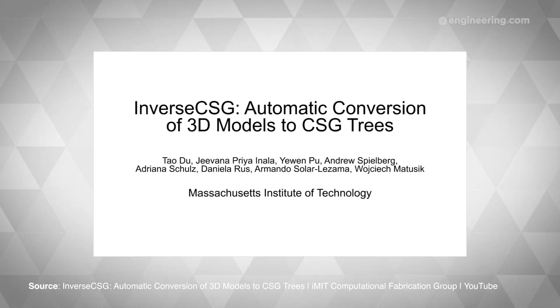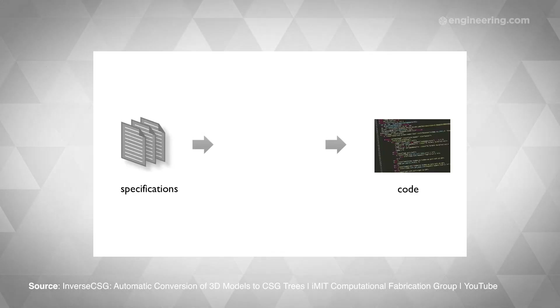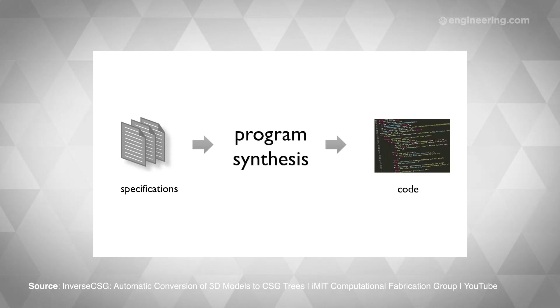Customizing that mesh can be difficult, and this is where the problem comes in. Converting a 3D mesh back into a 3D model doesn't scale well with complexity, and accuracy can be compromised when working with noisy, low-resolution files. Fortunately, a team of researchers from MIT have found a way to apply a technique known as program synthesis to break CAD models into their primitive shapes automatically.